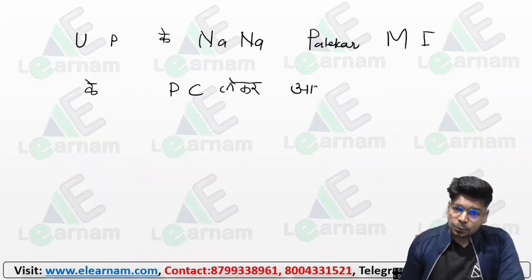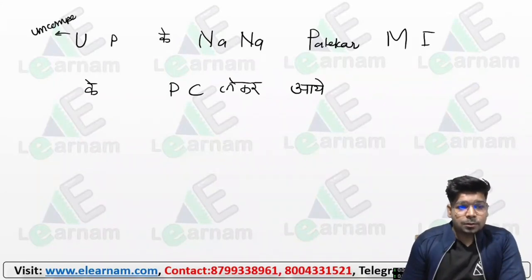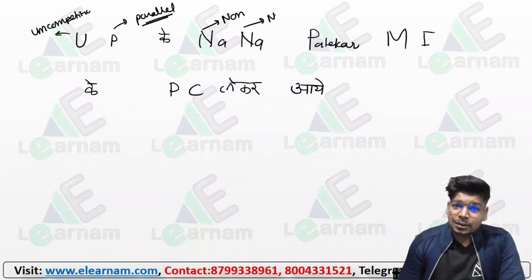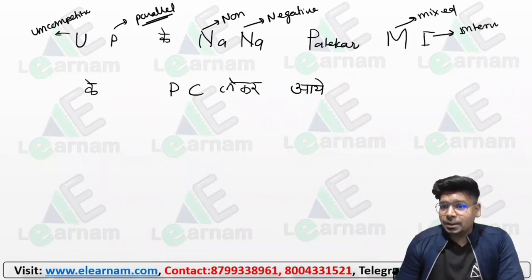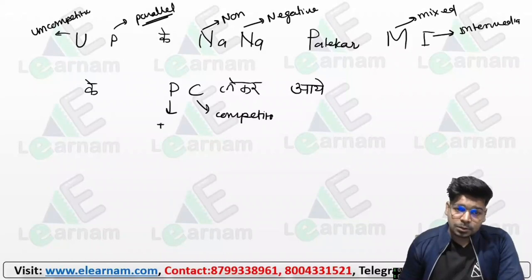What is the code? U is for uncompetitive, P is for parallel, N is for non-competitive, N is for negative, M is for mixed, I is for intermediate, and C is for competitive, P is for positive.